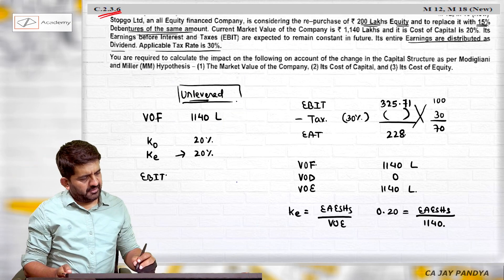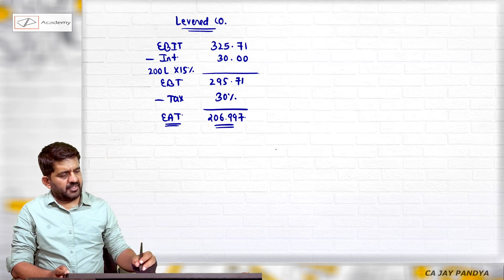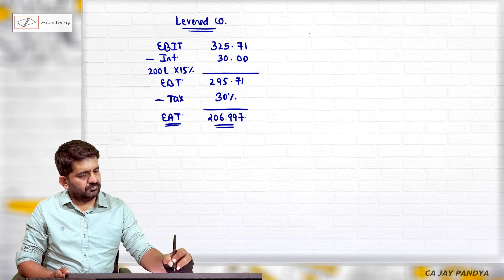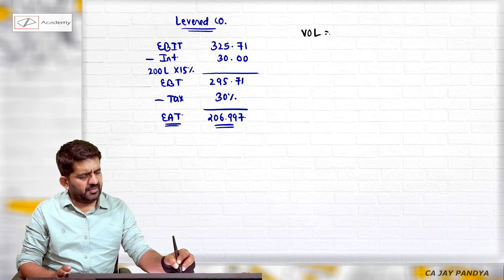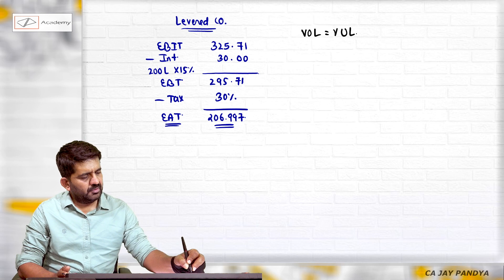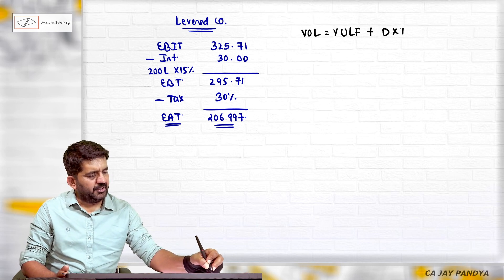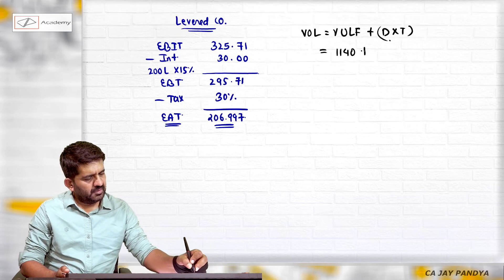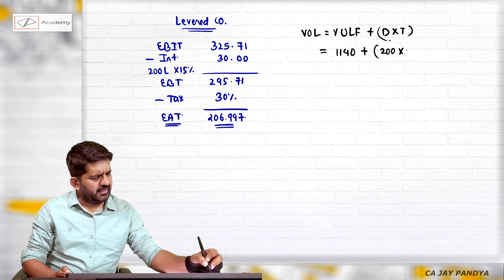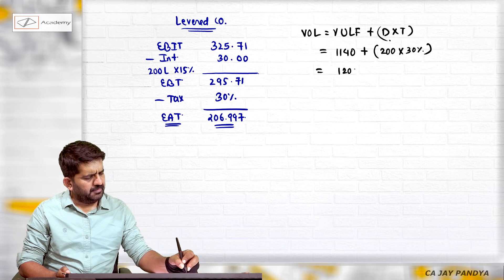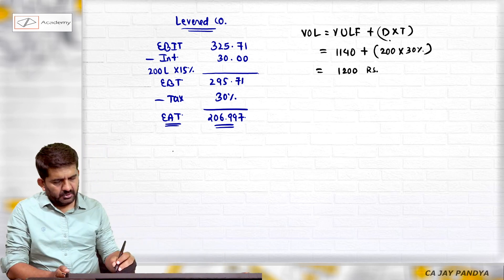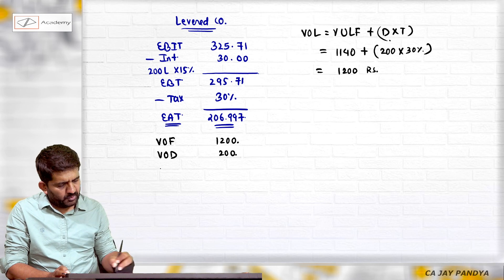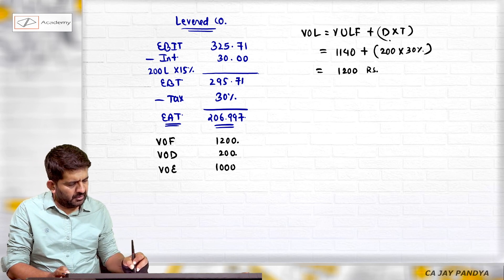What they want is the market value of the company, that is new company market value. Value of levered firm is value of unlevered firm plus debt into tax. Value of unlevered firm we are already knowing, 1140, plus debt will be 200 into 30 percent. So this will be 1200. So value of a firm will be 1200, value of debt is 200, so value of equity will be 1000 lakhs.